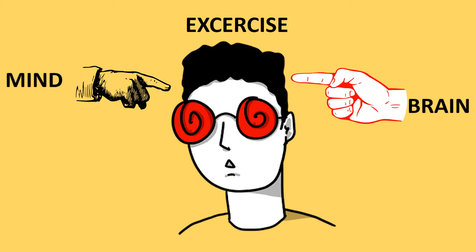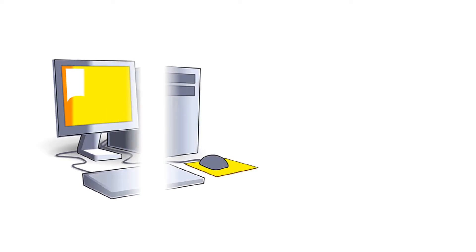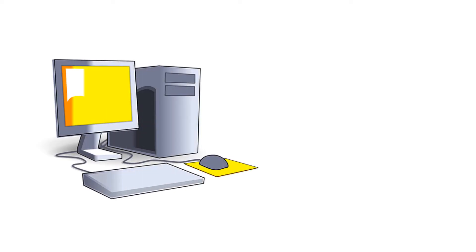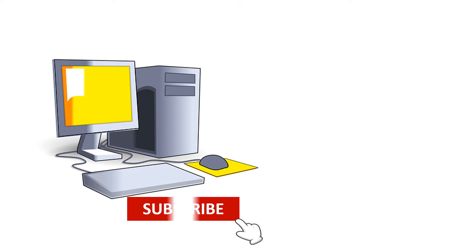This is what we need to understand: where is mind and where is brain. We are often confused between these two words — mind and brain. I'll tell you what is the difference between mind and brain so that you will have full clarity about this topic. We will understand it with the help of an example of a computer system.